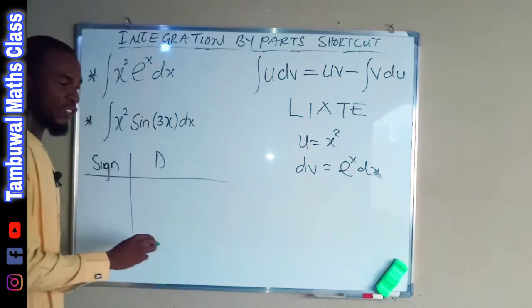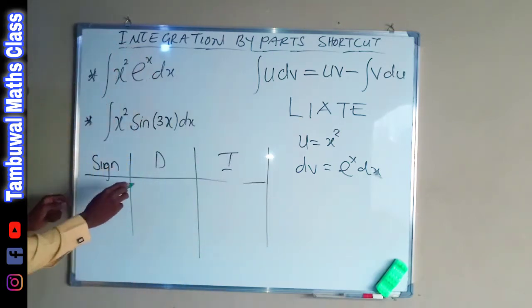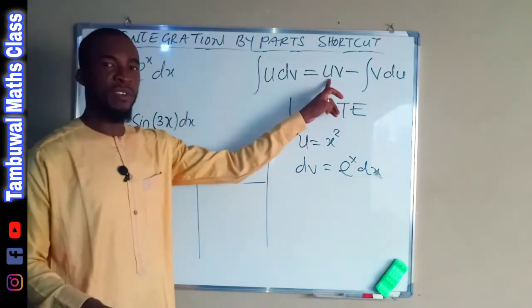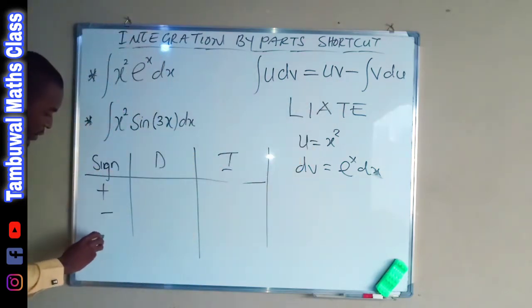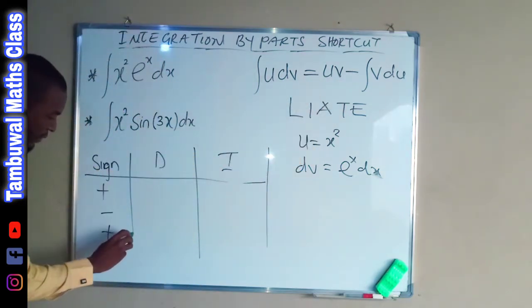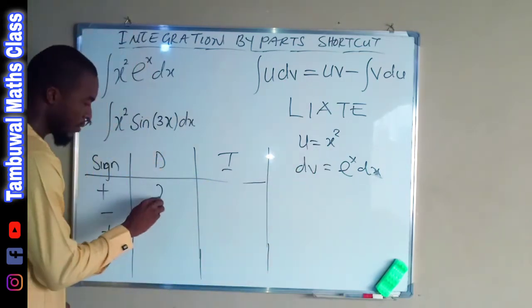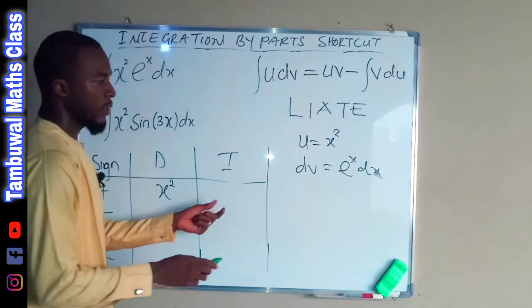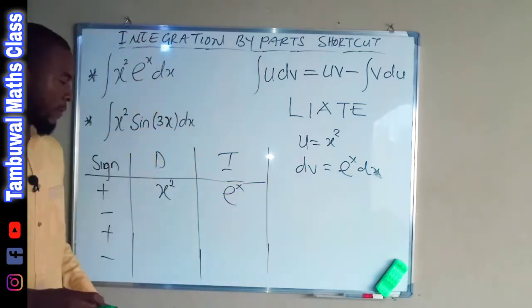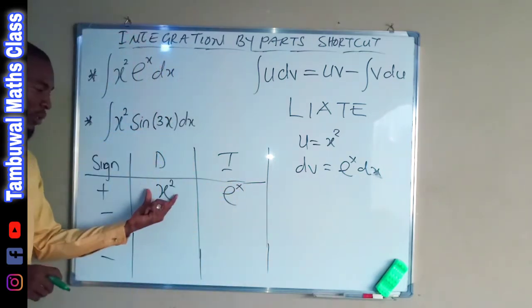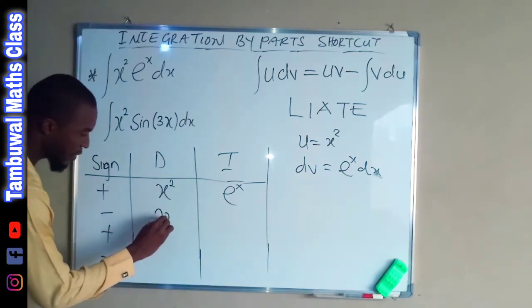D is for differentiation and I is for integration. The first term is positive so we set positive here, the second term is negative so we set negative here, then positive, negative. u is placed in the differentiation column, which is x squared, and dv is placed in the integration column, which is exponential x — forget about dx for now. We differentiate this column and integrate this column. If you differentiate x squared you get 2x.